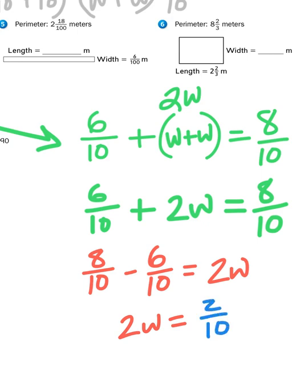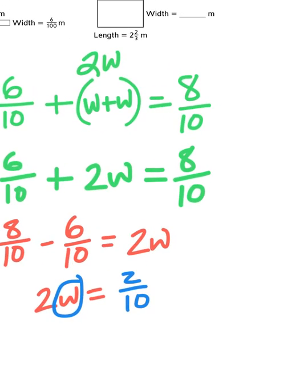Now, what is two w? Well, that is multiplying two times the width. Well, something times two gives me two tenths. So, now, what I have to do is I've got to figure out what w stands for. Well, you could probably guess that if I multiply some number two times a width and it gives me two tenths. And if I look at my whole number on one side of the equation and my numerator on the other side of the equation, what I must be multiplying together is one tenth.